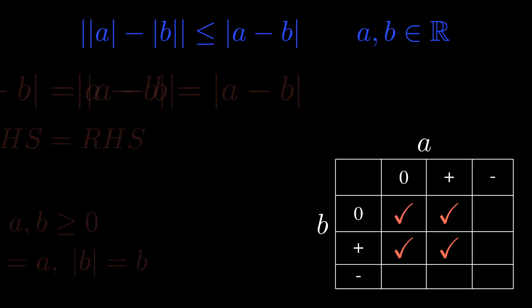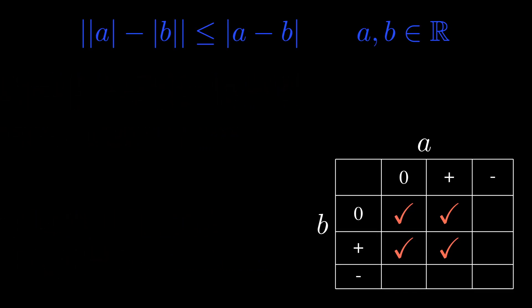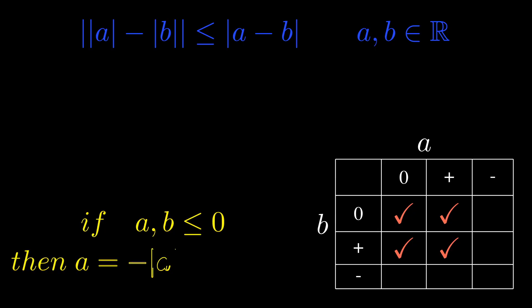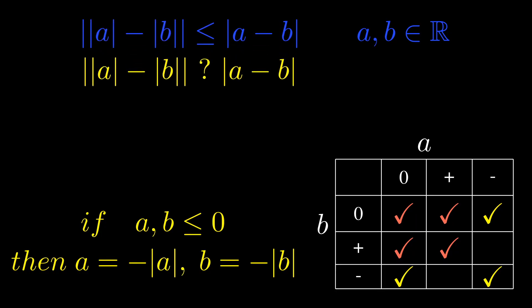Next let's try to prove when a and b are actually less than or equal to zero — so they're both negative or zero. In this case, you can see that a can be rewritten as negative absolute value of a, and b can be rewritten as negative absolute value of b. And that would take care of another three possibilities from our table.